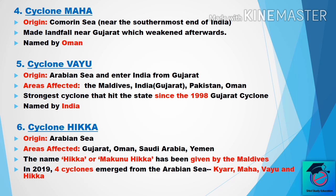The sixth one is Cyclone Hikaa. It was originally from the Arabian Sea and affected areas are Gujarat, Oman, Saudi Arabia, and Yemen. The name Hikaa was given by the Maldives.